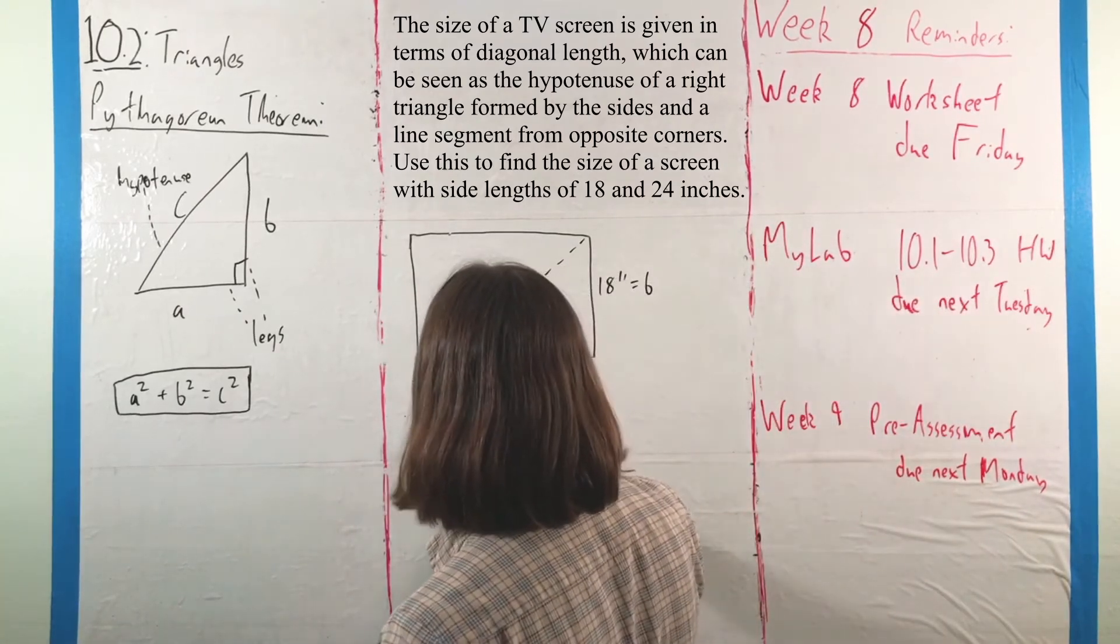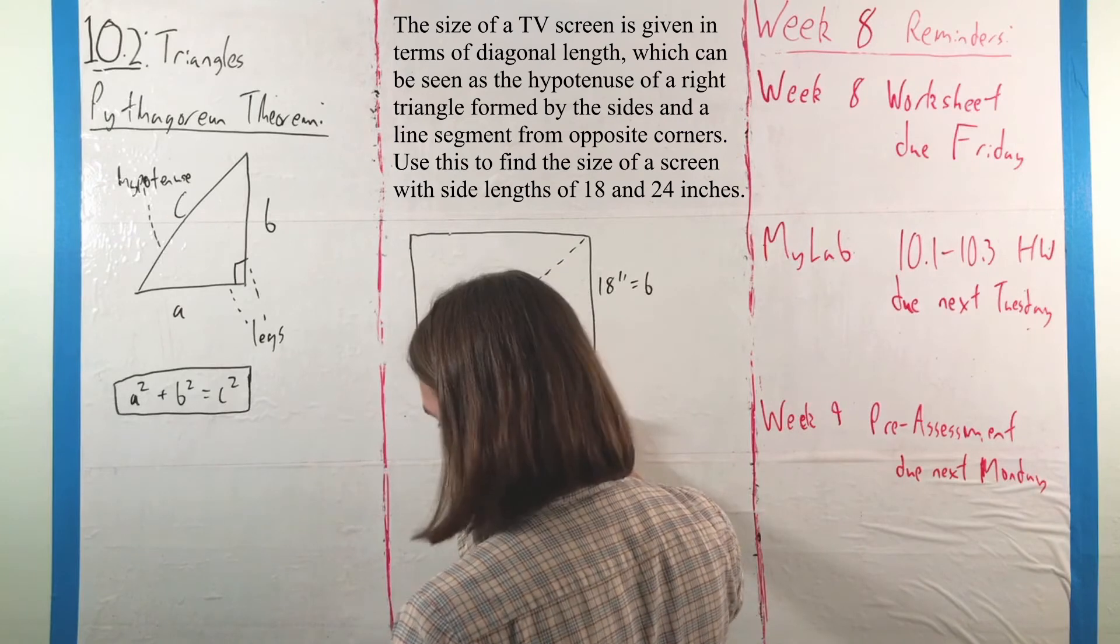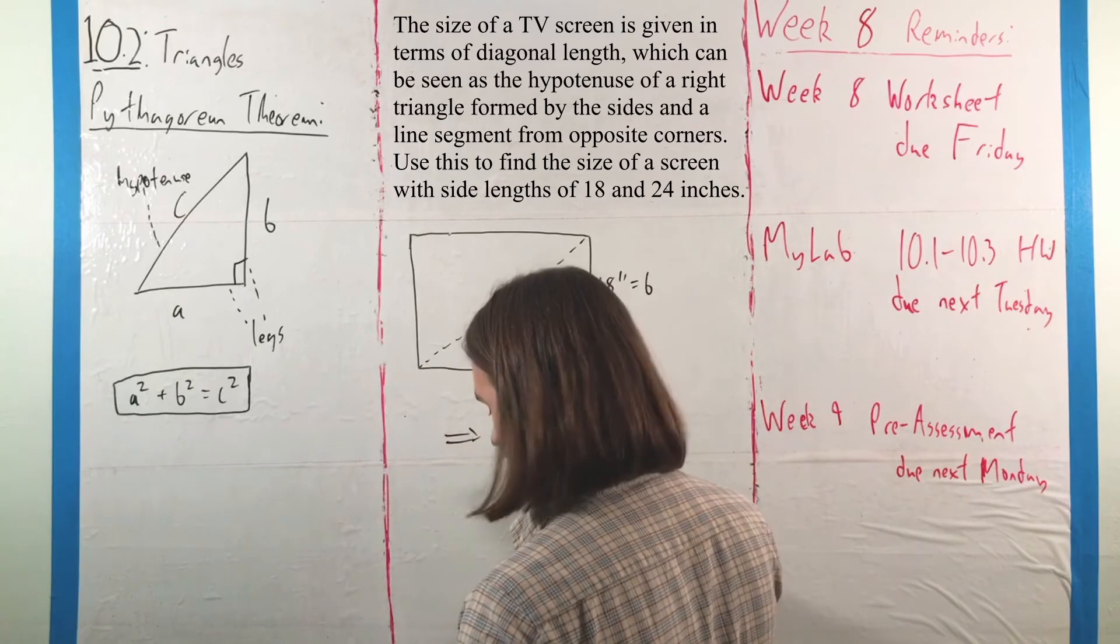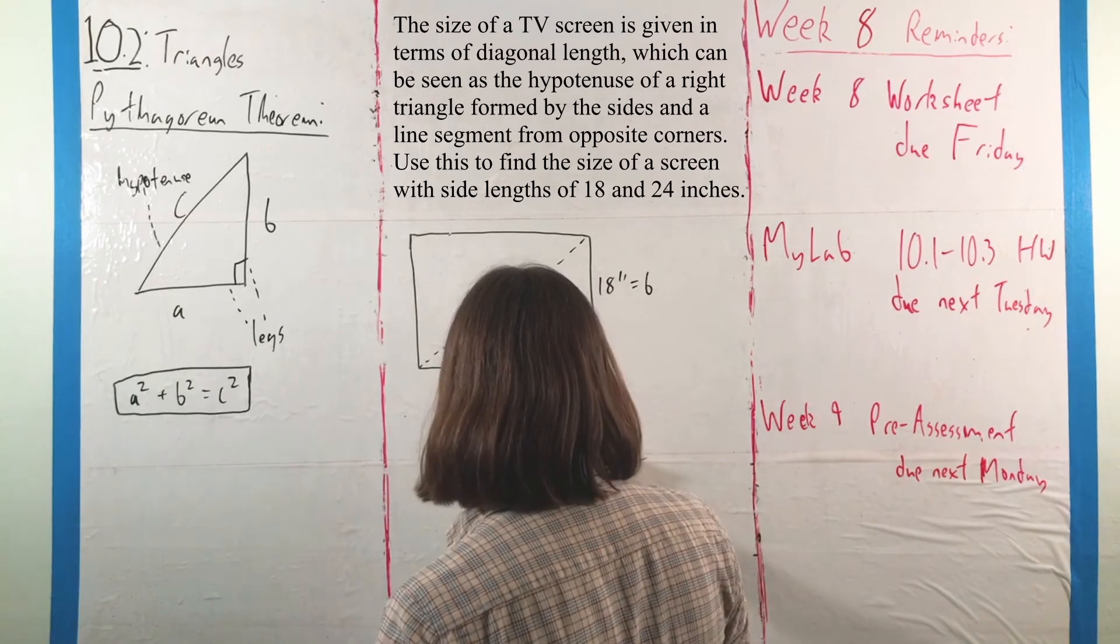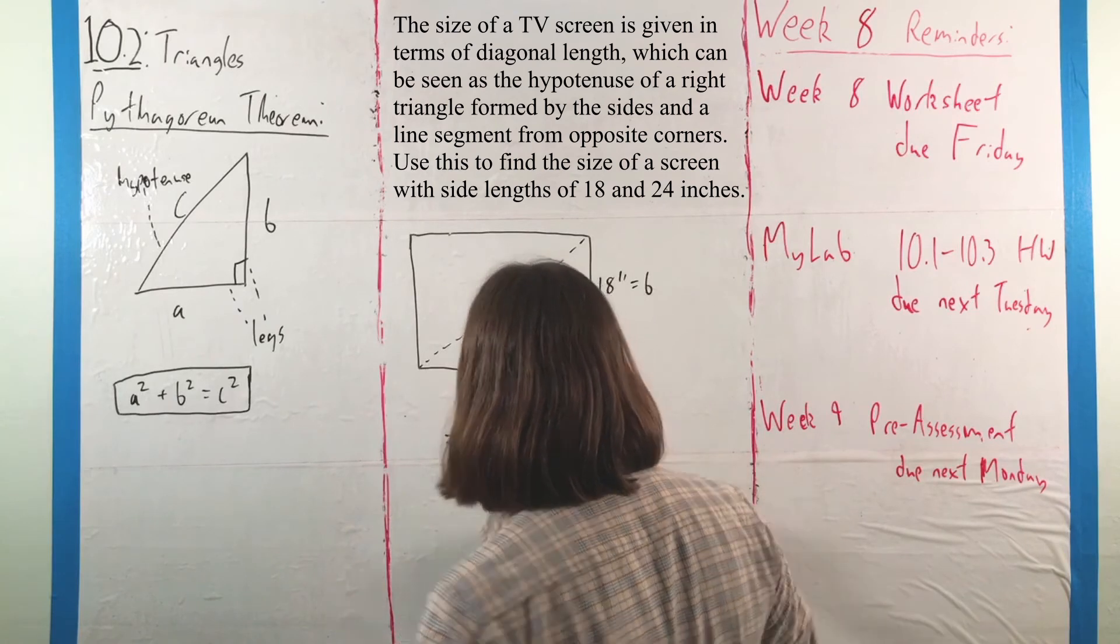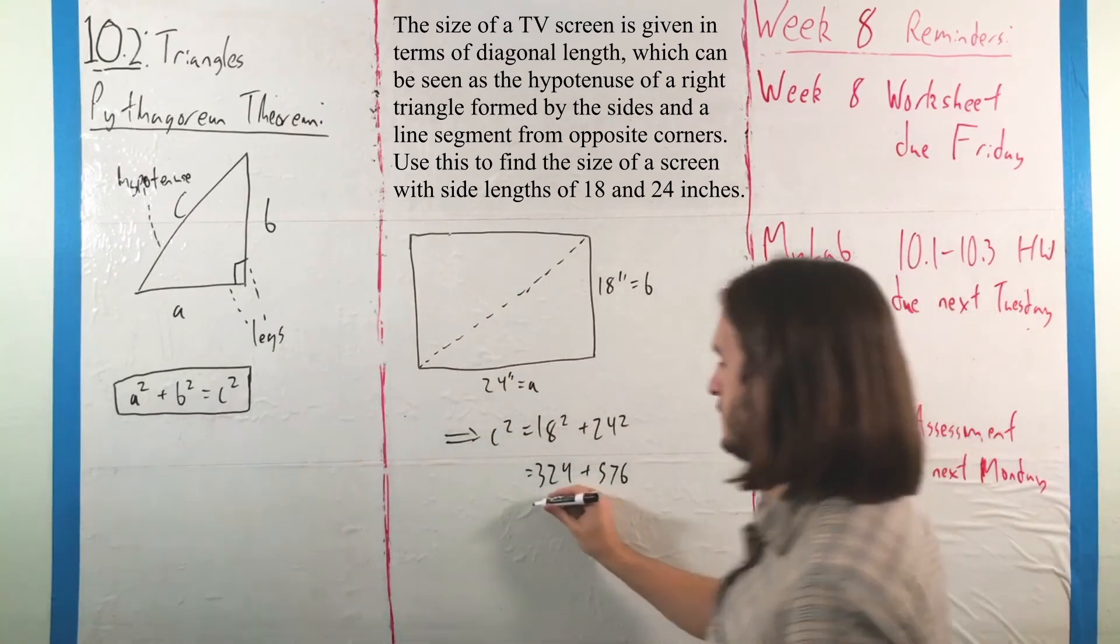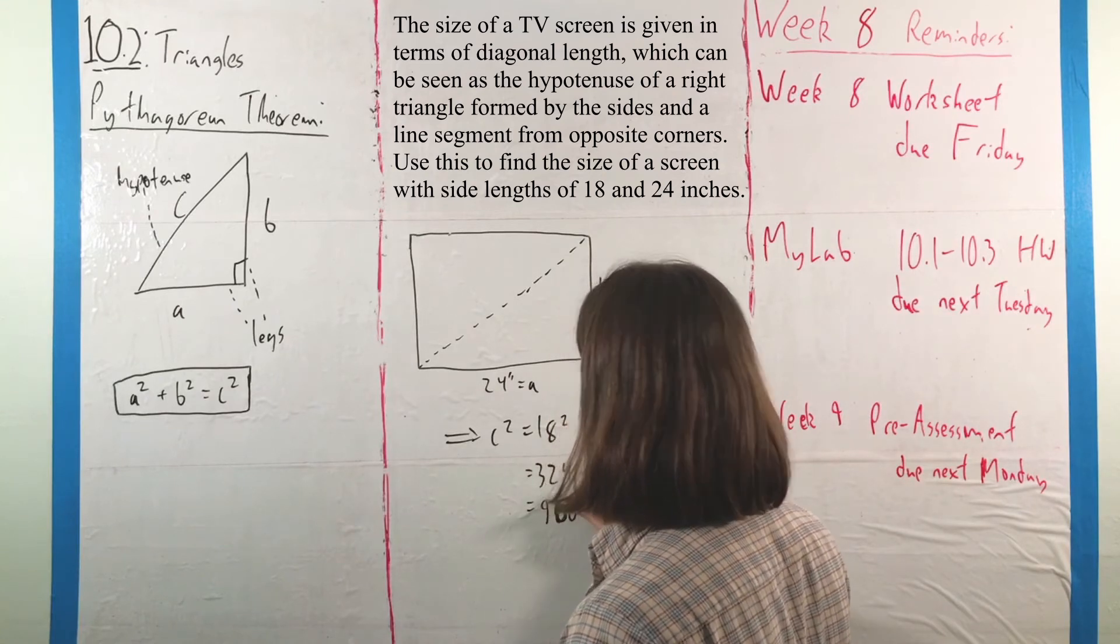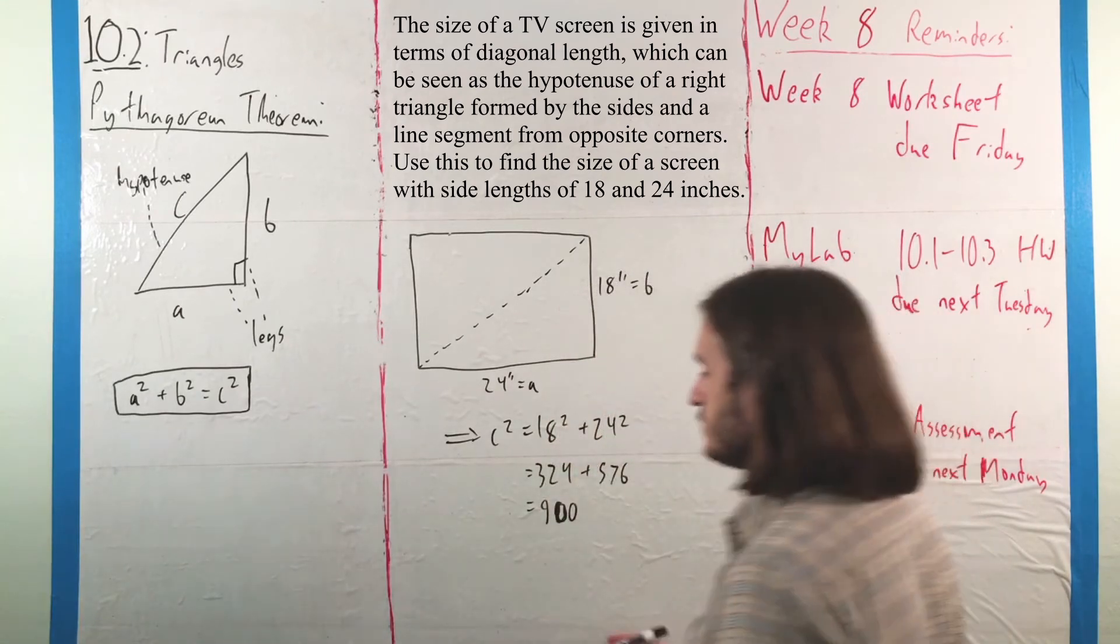So we have C squared is equal to 18 squared plus 24 squared. Or, C squared is equal to 324 plus 576, 324 plus 576 is 900, which tells us that C squared is equal to 900.